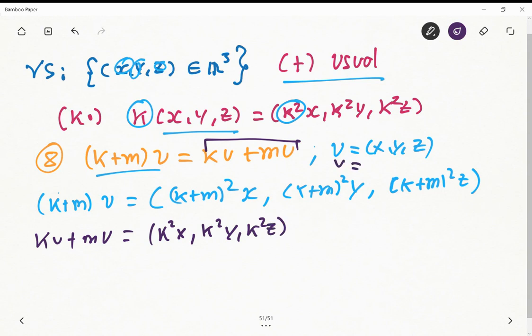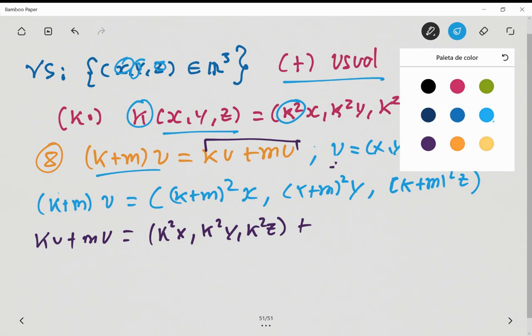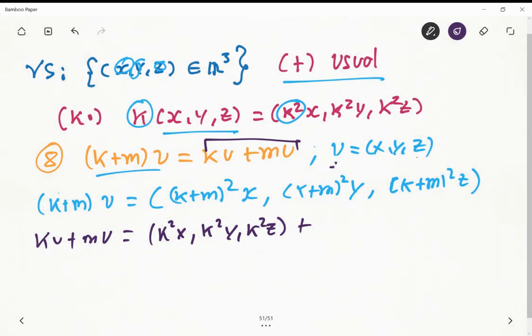And let me define v as alpha, beta, and gamma. So plus... I'm sorry, here is not v, it's just u, sorry. Yeah, and here we got m squared x, m squared y, and m squared z.